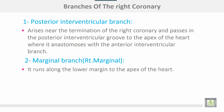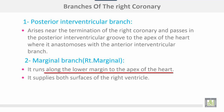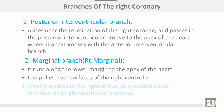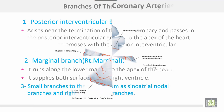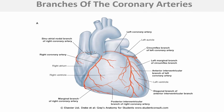The marginal branch, sometimes called the right marginal, runs along the lower margin of the apex of the heart and supplies both surfaces of the right ventricle. Small branches also supply the right atrium, the sinoatrial node, and give right ventricular branches.